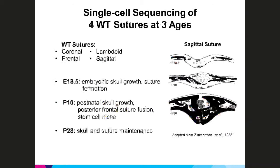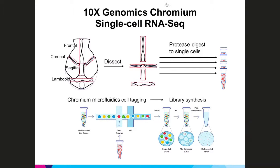We're working on four wild-type sutures at three ages that complement and extend the transcriptome atlas data. The four sutures are the calvarial sutures most commonly affected in human craniosynostosis: the coronal, lambdoid, frontal and sagittal. The three ages reflect distinct phases of suture formation — E18.5 captures embryonic skull growth and early suture formation; P10 captures postnatal growth, posterior frontal suture fusion, and stem cell niche development; and P28 captures more stable skull and suture maintenance.